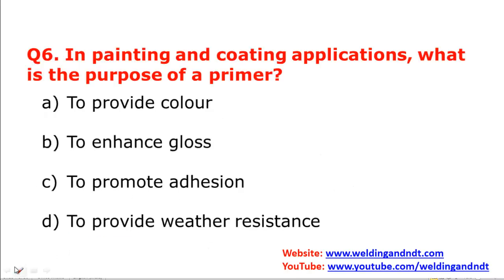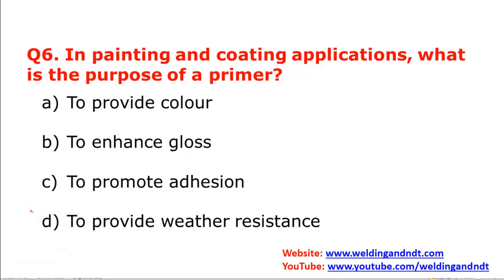Question number six is related to painting. A QA/QC engineer will have to oversee painting as well. In painting and coating applications, what is the purpose of a primer? Primer is used to promote adhesion between the steel substrate and the final coating.